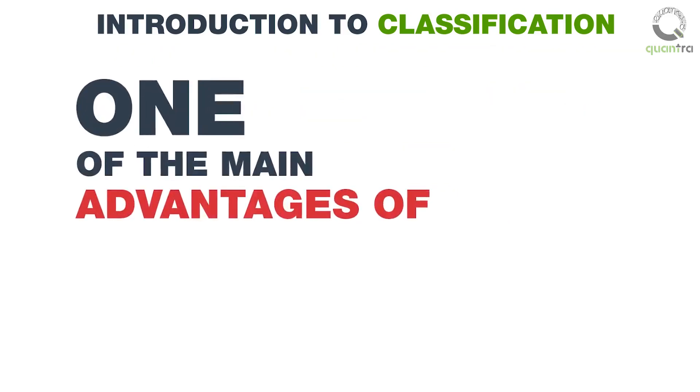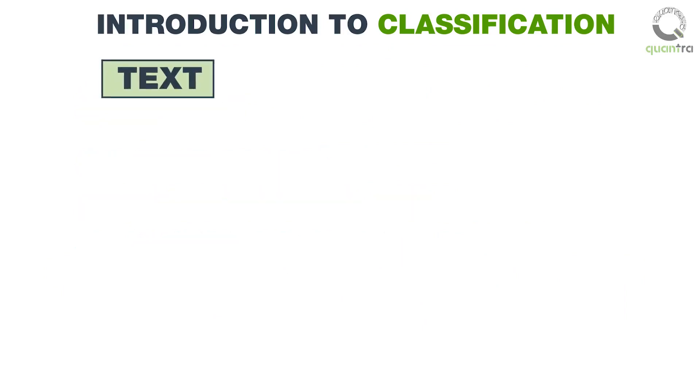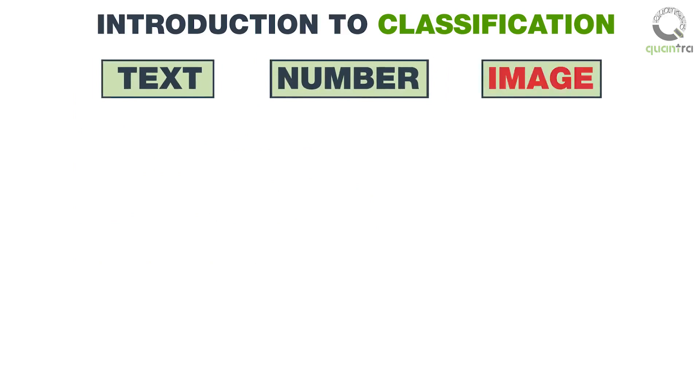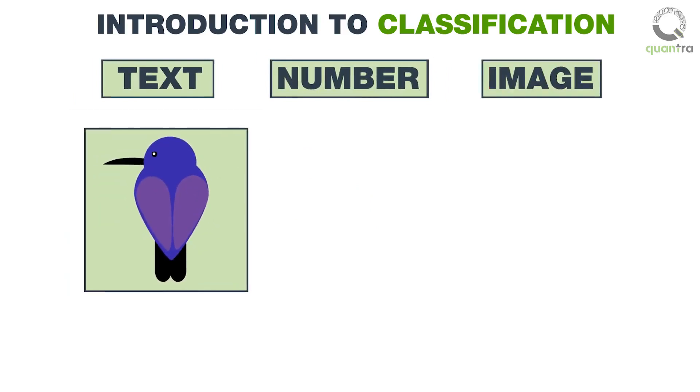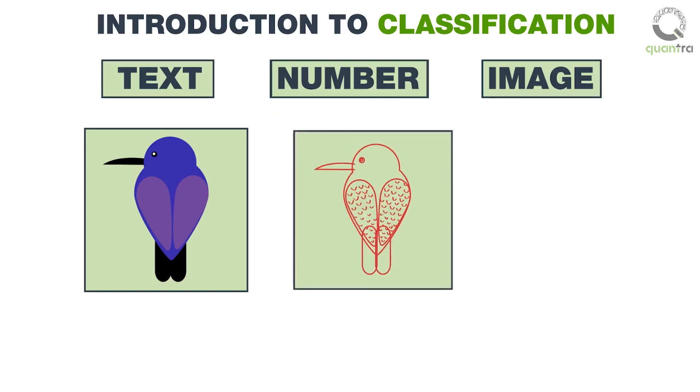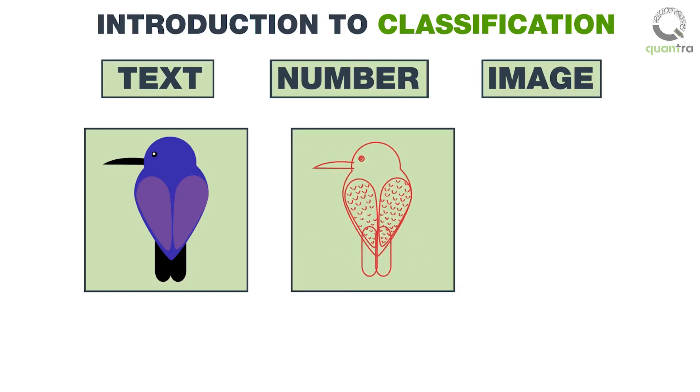One of the main advantages of classification is that it is not restricted to just text or number data, but also includes image data. Consider this image. The classifier will perform image detection to predict whether the image is of an animal or a bird.